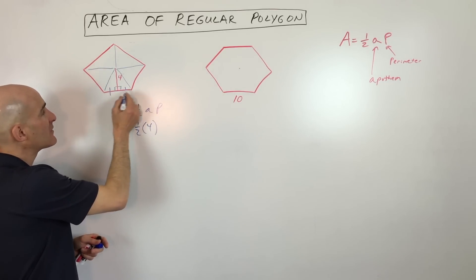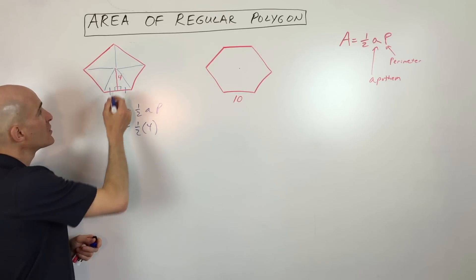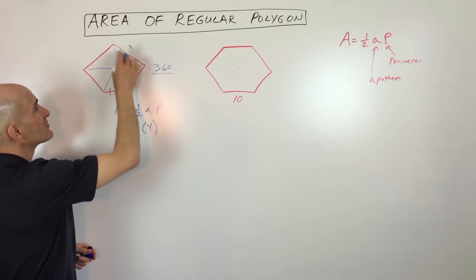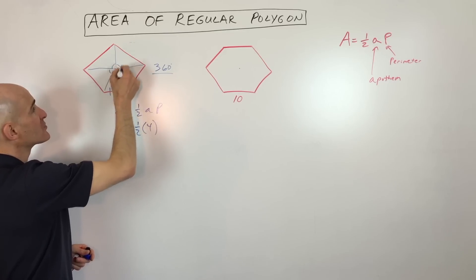The perimeter now, we have to find the length of one of these sides, right? So what we're going to do is we're going to find out what this central angle is. And the way you do that is you take 360 degrees, divided by the number of sides, or the number of angles. You can see the number of triangles that are formed here, there's going to be five.